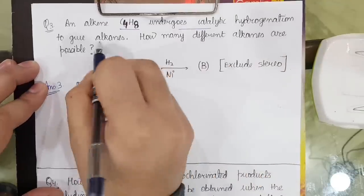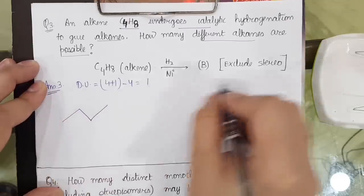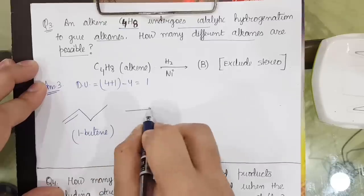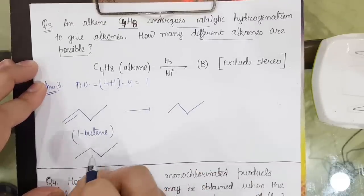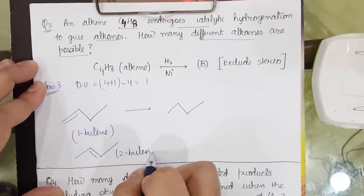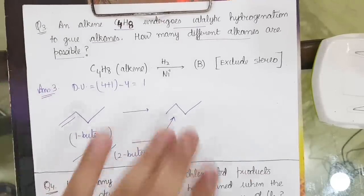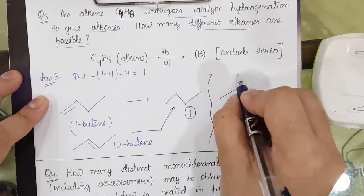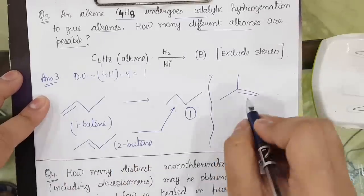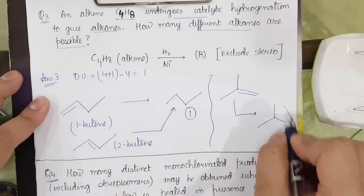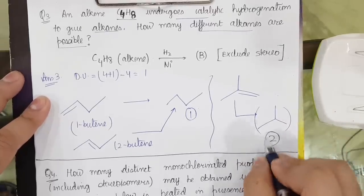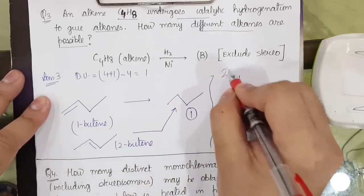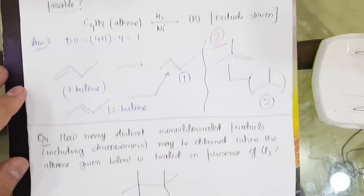We exclude stereoisomers. 1-butene on hydrogenation gives n-butane. 2-butene on hydrogenation also gives n-butane. The other isomer of C4H8, 2-methylpropene (isobutylene), on hydrogenation gives 2-methylpropane. So only 2 different alkanes are possible, since stereoisomers are excluded.